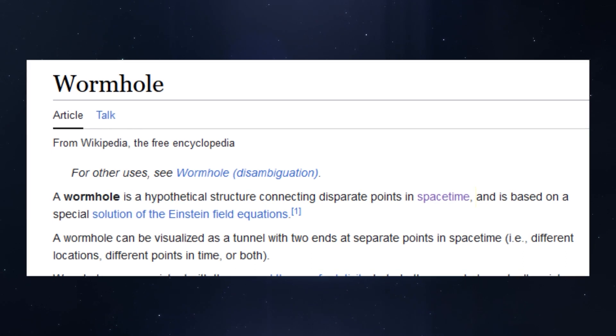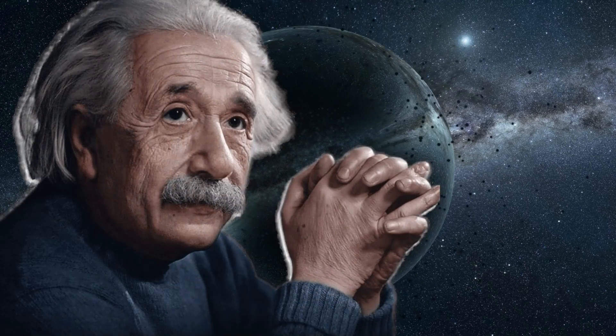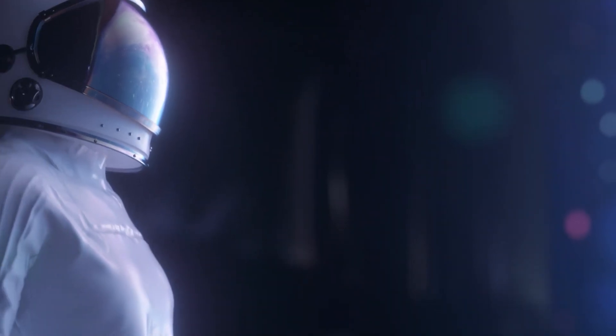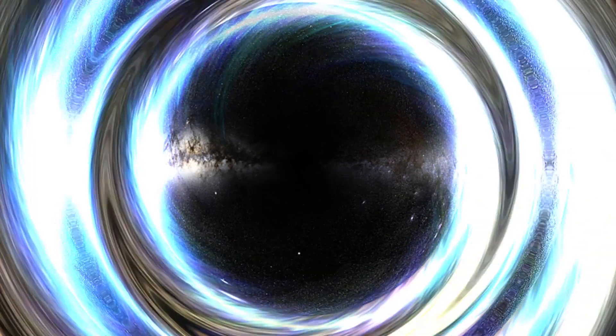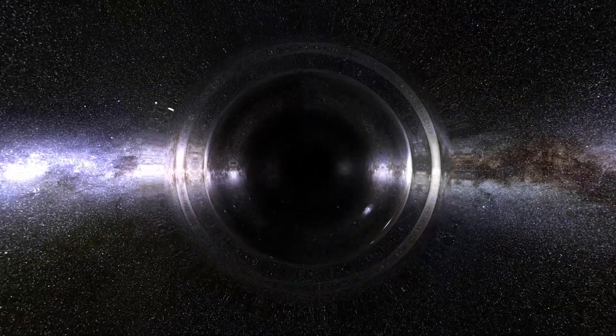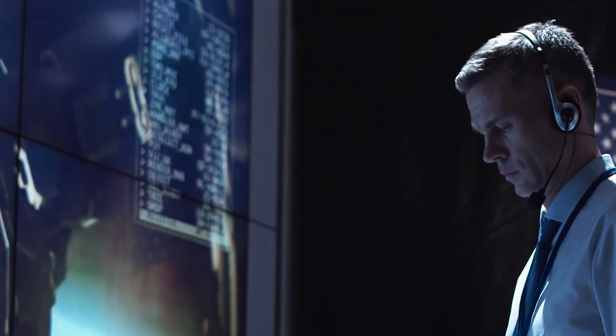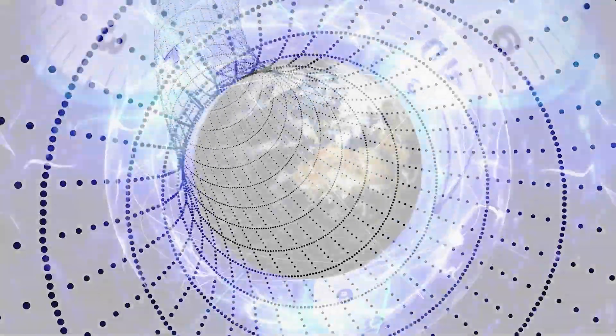It's important to note that wormholes are theoretical. Wormholes are a solution to Einstein's field equations. Scientists have tried to imagine wormholes in movies, and there have been many theories about them, but so far, no one has actually seen one. Scientists don't know if wormholes actually exist, but if they do, they will also act as time machines.